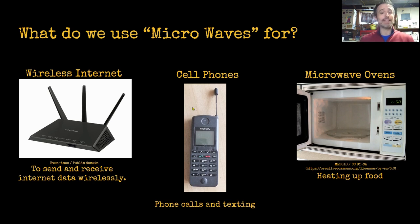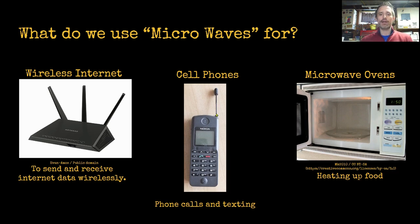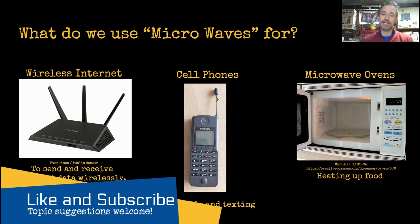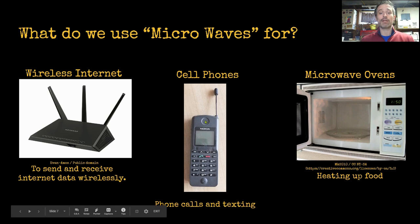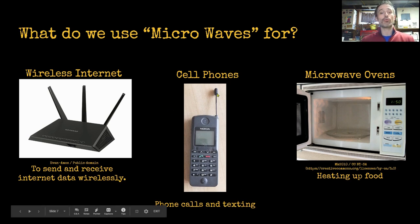Cell phones also use microwaves — they connect to a cell phone tower by sending microwaves. A cell phone can connect to your Wi-Fi router, but it can also connect to a cell phone tower. I chose this old cell phone because it has an external antenna — you could pull it out whenever you were using it or if you had bad reception. All cell phones have antennas inside of them. Inside your phone there is an antenna and it connects via Wi-Fi. Bluetooth is a radio wave — I believe it's in the normal radio spectrum. Phone calls and texting, when you're not connected to the internet, go through a cell phone tower.